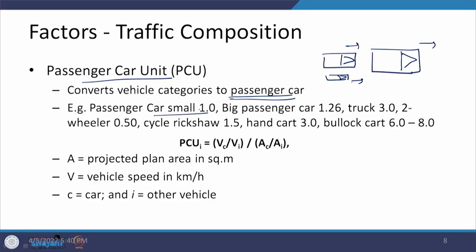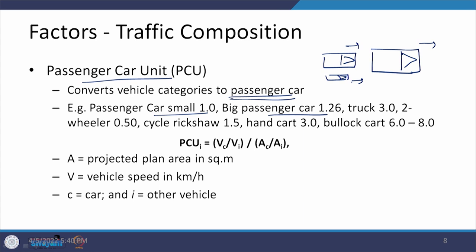When vehicles of different types move on a road, they occupy different spaces and move at different speeds, impacting the flow properties of a lane or road. To account for this in PCU conversion: a small car is 1.0, a big passenger car above 1500 CC is 1.26, a truck is equivalent to 3 cars, a two-wheeler is 0.5, a cycle rickshaw is 1.5, and a bullock cart can be 6 to 8 depending on size. These are static PCU values given in Indian Roads Congress codes for different conditions like mid-blocks or intersections.